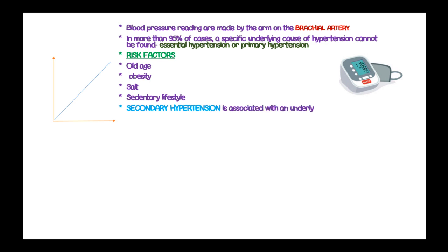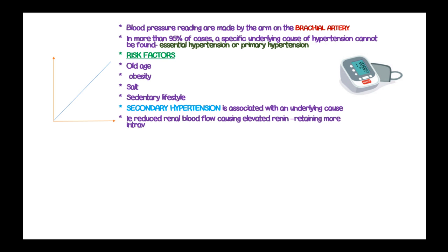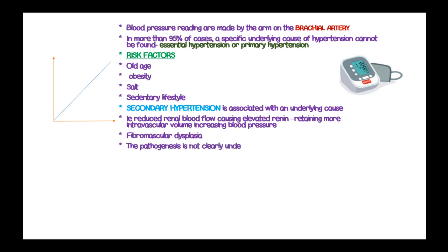Secondary hypertension is associated with an underlying cause, and the most common cause is reduced renal blood flow causing elevated production of renin, retaining more intravascular volume and therefore increasing blood pressure.